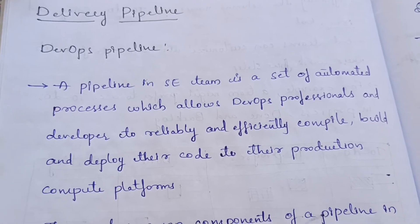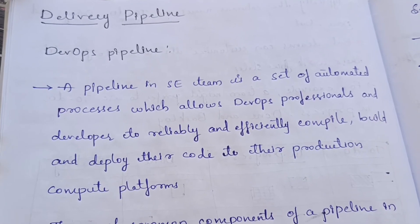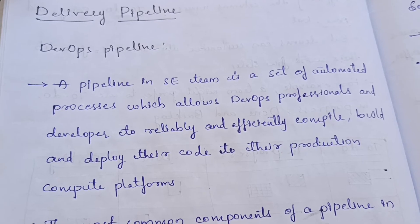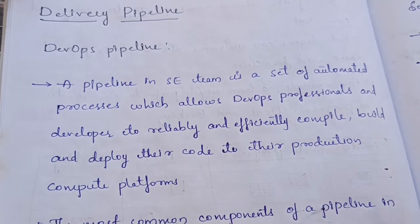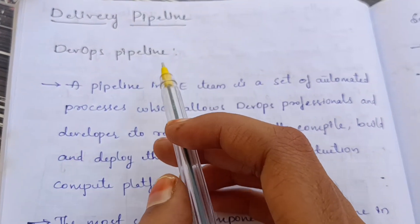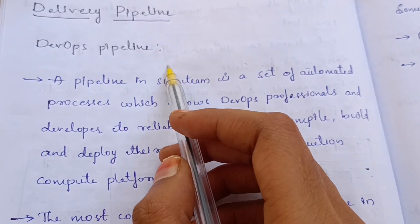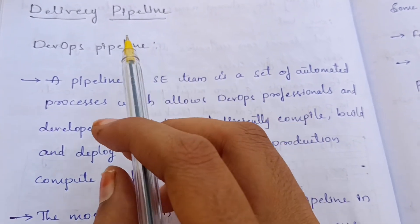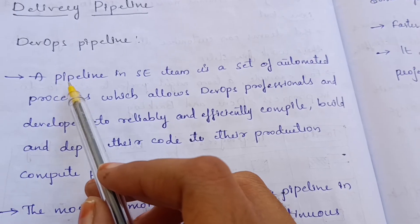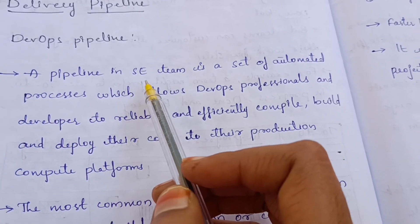Welcome to MITechstudies. Today we are going to discuss about the delivery pipeline. Before discussing about the delivery pipeline, let us first discuss about the DevOps pipeline. What is a DevOps pipeline? A pipeline in software engineering is a set of automated processes which allows DevOps professionals